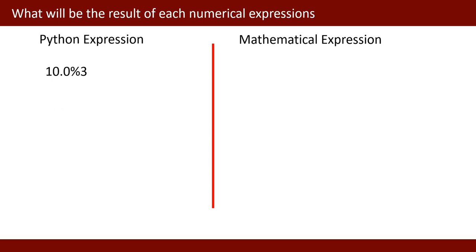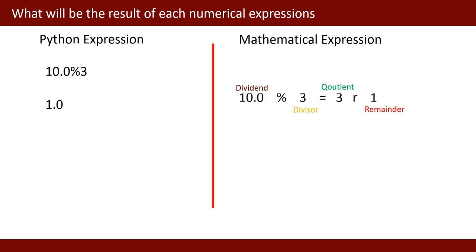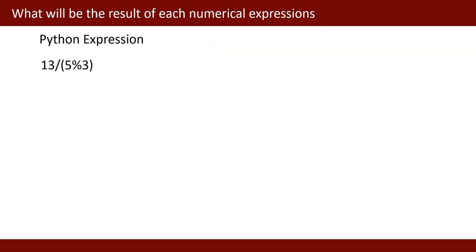Next, the Python expression is 10 % 3. The percentage sign means it will give me the remainder. 10 is the dividend and 3 is the divisor. You will get quotient 3 and remainder 1. So 3 is the quotient and 1 is the remaining value.